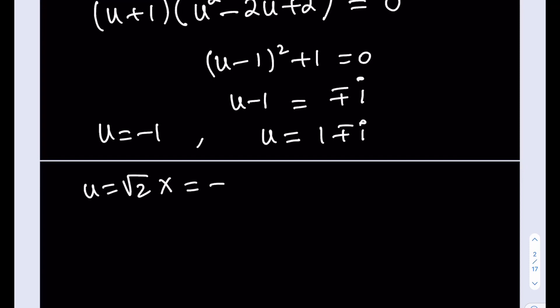If you go ahead and set each one equal to this, we're going to be getting the x values from here. For example, if I set this equal to negative 1, then x becomes negative 1 over square root of 2, which is negative root 2 over 2. So this is going to be the real solution.